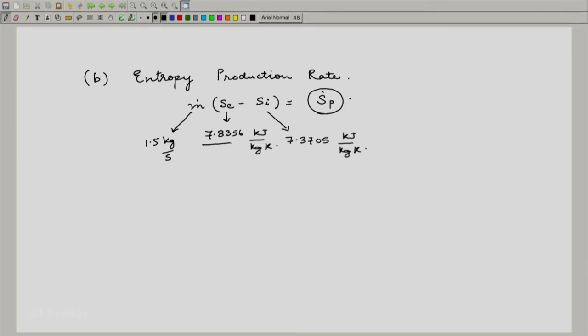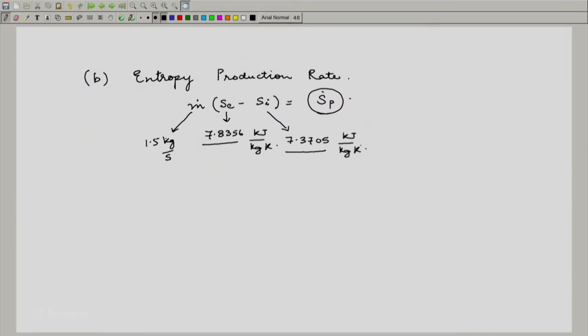You notice that s e is more than s i which is as it should be because if it was lesser than this process would not have been possible for an adiabatic open system. And we can now easily subtract multiply by 1.5 and we would get s dot p which is the entropy production rate.